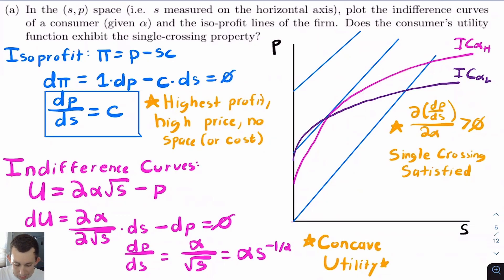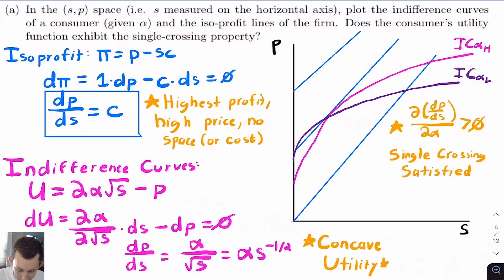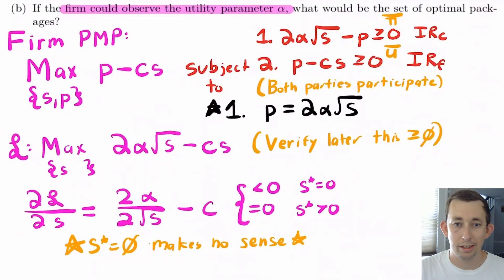Notice that the two sides are opposed and want to go in opposite directions. The firm gets the highest profit when they sell something for a lot of money with zero storage, while the consumer is happiest with a lot of storage at no price. So these indifference curves and iso-profit curves move in opposite directions, and we're going to get to a point where the iso-profit is tangent to the indifference curve — both sides just barely touch at the maximum.